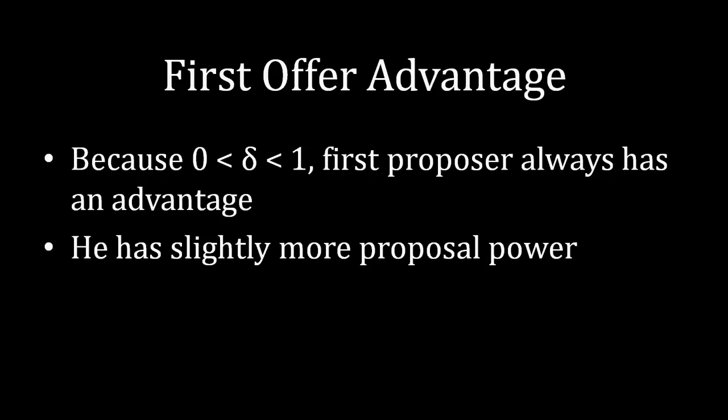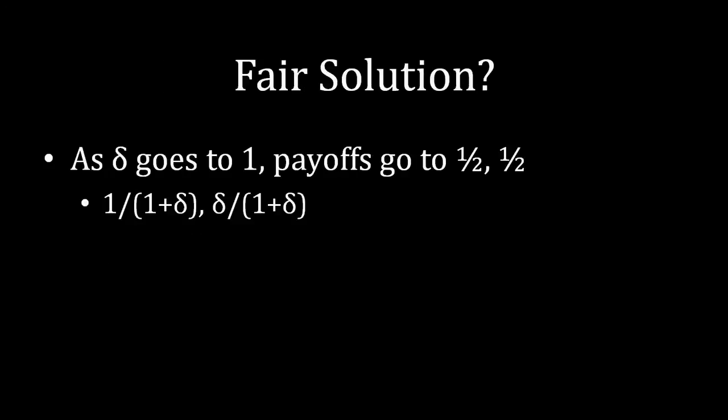Nevertheless, despite the fact that the first offer gives an advantage to the first proposer, we often think of the Rubinstein bargaining model as having a fair solution. And here's why. As δ goes to 1, the payoffs become more and more equitable, and they finally become in fact equal to each other at exactly 1.